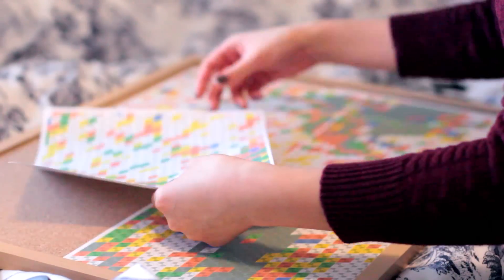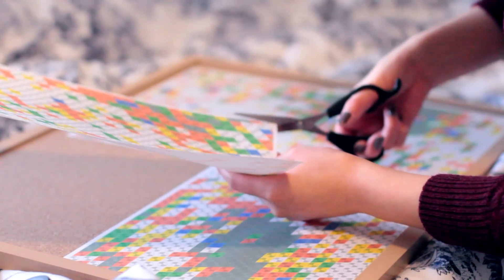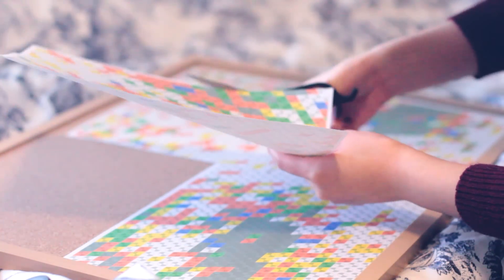Print those out and place them onto your corkboard. Trim off any excess paper and insert some pins to keep them in place.